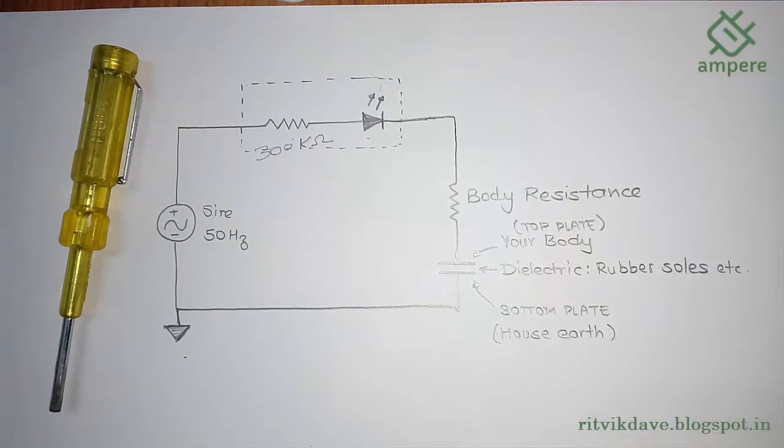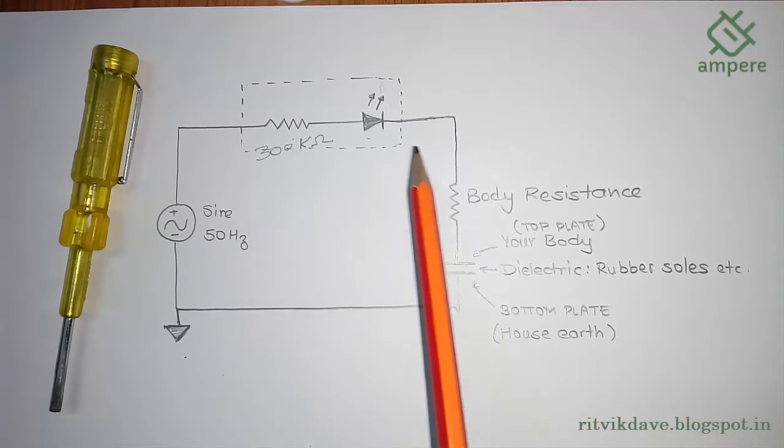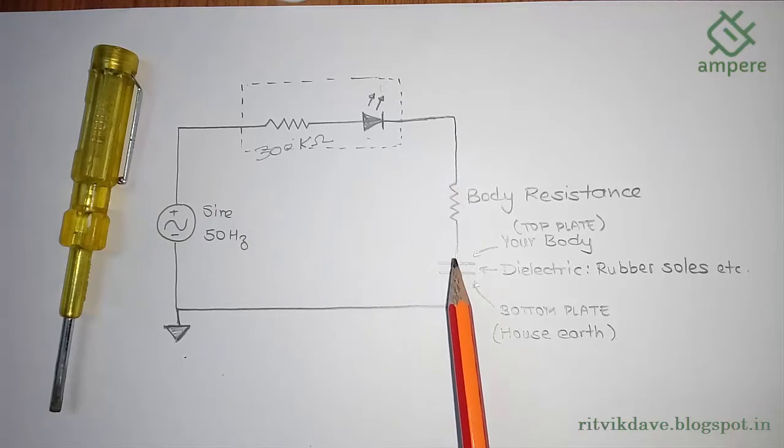This is a low-cost type of test lamp that only contacts one side of the circuit. It relies on stray capacitance and current passing through the user's body to complete the circuit.